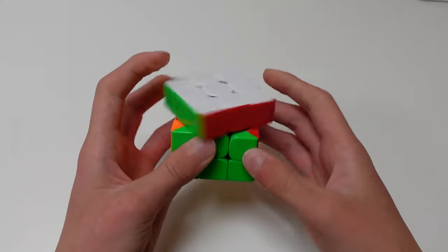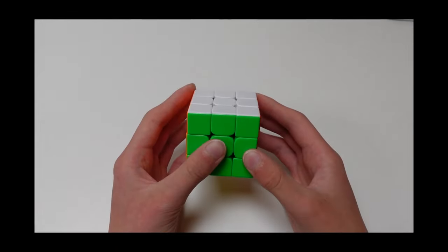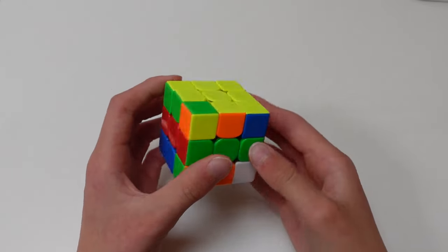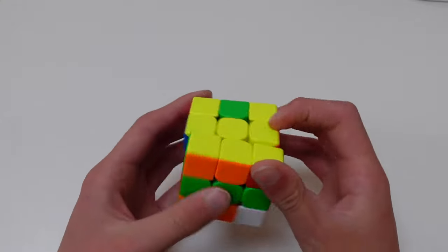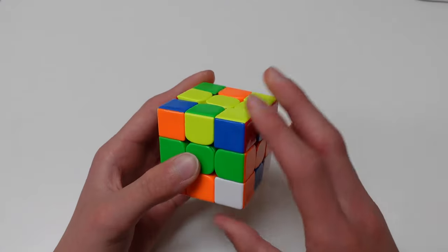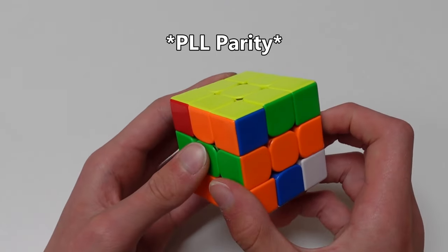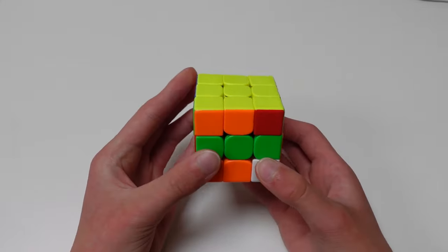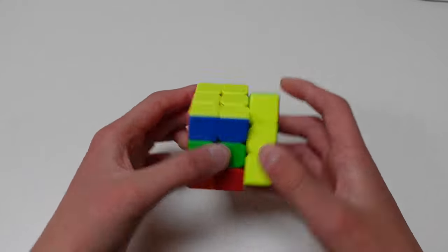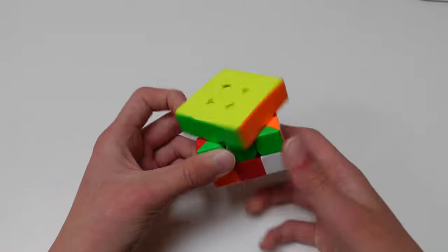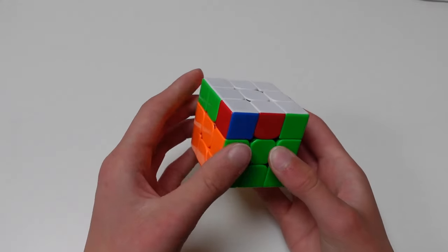The belt method might look pretty good at first, but it's not, because you often run into problems like this. Or this. Or this. These problems require you to do, and sometimes repeat, different parity algorithms, which slow down the solve a lot. Therefore, the belt method isn't very popular.